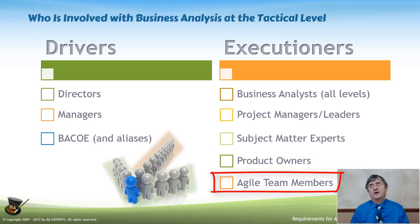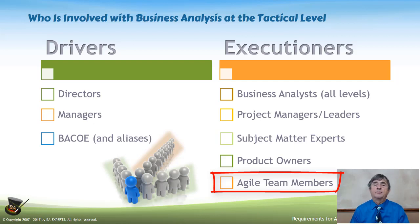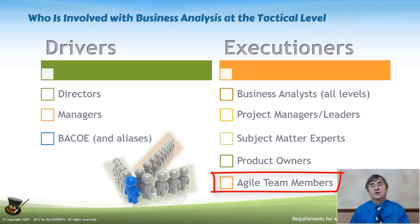In agile implementations, many organizations have moved to what is called a customer-side team — people who try to stay ahead of the agile developers by looking at the user stories coming up in the next sprint, to make sure they are ready for the developers so that developers aren't sitting around with nothing to do.